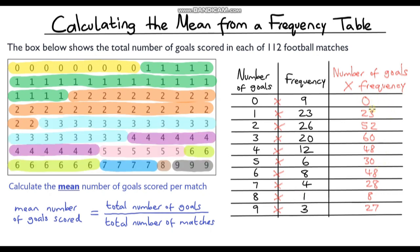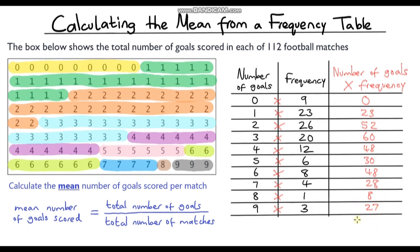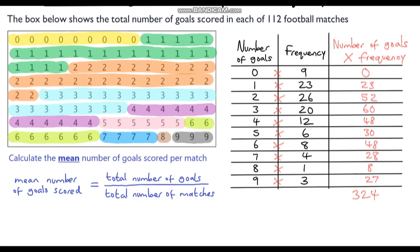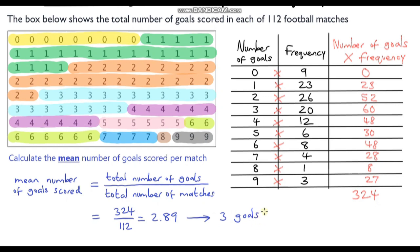We've calculated the total number of goals scored for each category. To work out the grand total, we just add up all of these values. Using my calculator, that gives us 324. So in total there were 324 goals scored out of 112 matches. The mean is 324 divided by 112, which gives me 2.89 goals per match. Since you can't score 2.89 goals, rounding to the nearest whole number gives us approximately 3 goals per match on average.